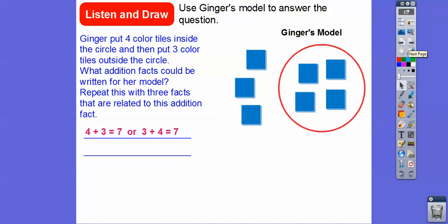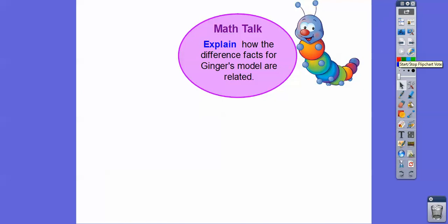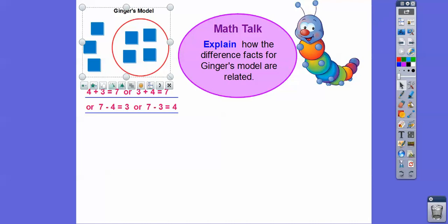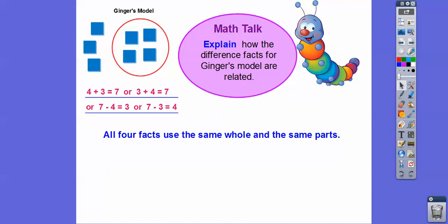And then we can do some subtraction facts. We can do the whole, which is all 7 of them — all of them are the whole right there. So 7 minus this group right here would leave us with this group. So 7 minus 4 equals 3. And we can do the whole and subtract off this difference, so 7 minus 3 also equals 4. All four facts use the same whole and the same parts, whether we're adding them or subtracting them.